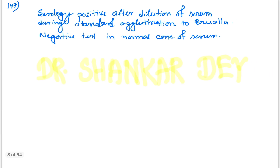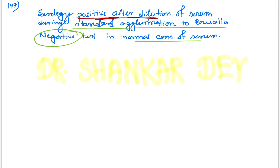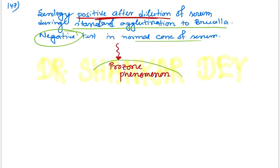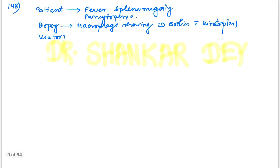Question 147: Serology test — standard agglutination test for Brucella was negative at normal serum concentration, but became positive after dilution of serum. This is because of antibody excess. This phenomenon is called the prozone phenomenon — taken from immunology. At normal concentration the test was negative, but after diluting the sample it became positive.